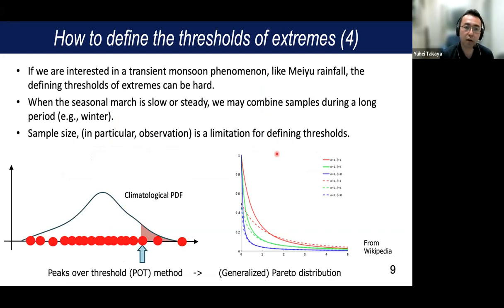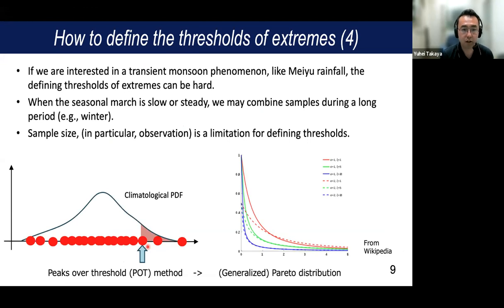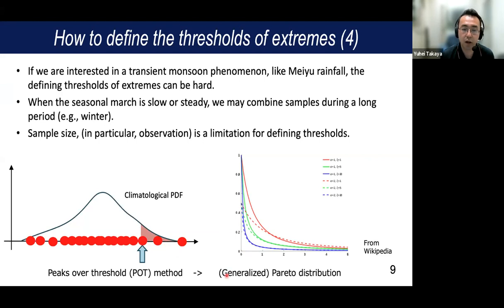Another way to define the threshold of observed precipitation: if we have 30 years of data and take the highest 3 years, we can define the 10% highest extremes threshold. We can also compute the exceedance probability and fit it using the so-called Pareto distribution. These are the basic mathematical and analytical theories that can be used to analyze extremes.